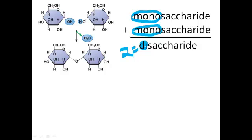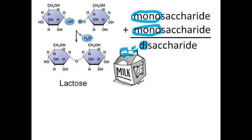Lactose is a disaccharide that's found in milk that those who are lactose intolerant have trouble breaking down. Lactose is made when a glucose monomer and a galactose monomer are added together.